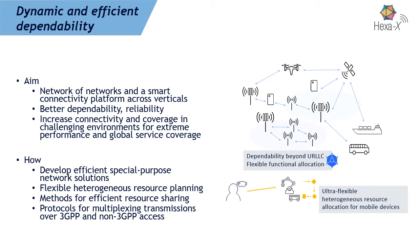The third area is dynamic and efficient dependability. The idea is that the 6G network serves as a connectivity and service platform across different verticals. To realize their use cases, better dependability and reliability are needed, along with increased connectivity and coverage in challenging environments with demanding performance requirements. Within HEXA-X, we develop special-purpose network solutions for specific application areas and look at flexible inter-node resource planning, resource sharing across access technologies, and multiplexing transmissions across 3GPP and non-3GPP access technologies.